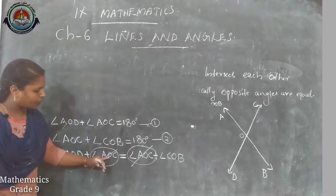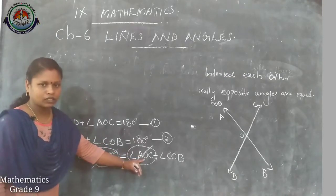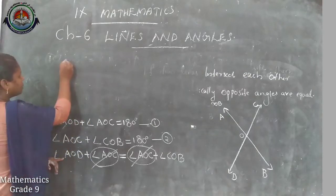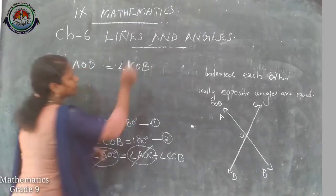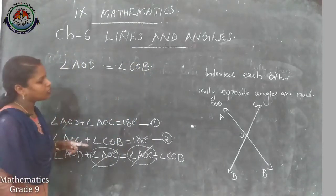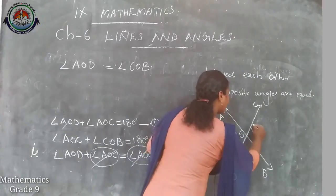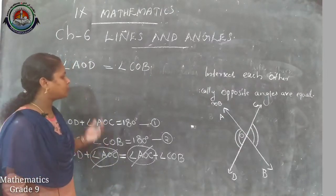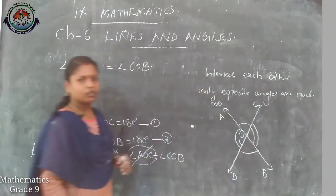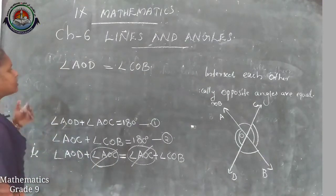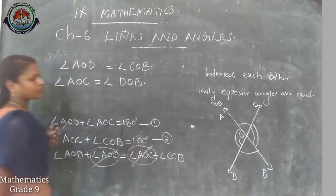From the equation angle AOD plus angle AOC equals angle AOC plus angle COB, since angle AOC is common, we cancel it from both sides, leaving angle AOD equals angle COB. These two angles are vertically opposite angles and are proved equal. Similarly, we can prove angle AOC equals angle DOB.